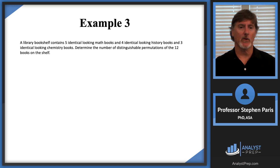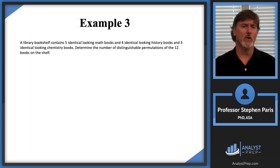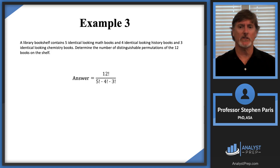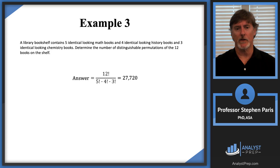Let's look at one last example. Instead of just math and history books, let's throw in three identical-looking chemistry books, giving a total of 12 books on the shelf. Using the same logic, the answer would be 12 factorial in the numerator, and in the denominator a product of five factorial, four factorial, and three factorial — because five books were identical of one type, four of another, and three of a third type. Going through the calculation gives 27,720 distinguishable arrangements of those 12 books on the bookshelf.